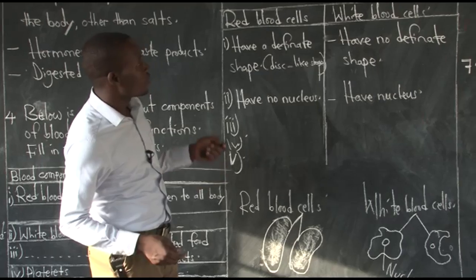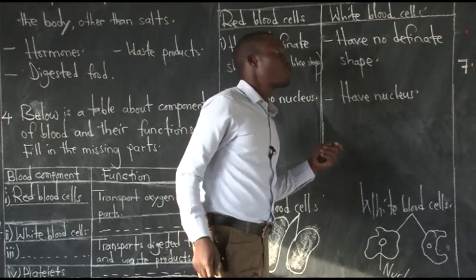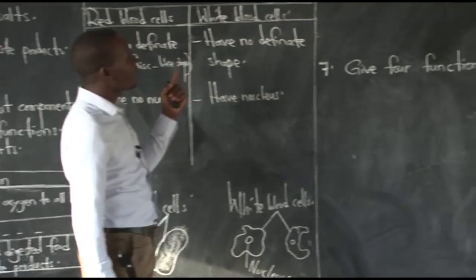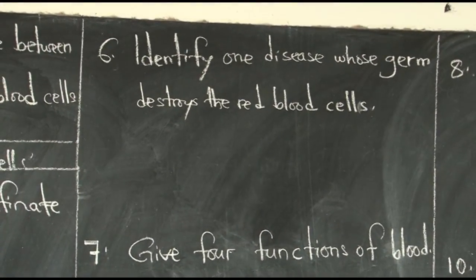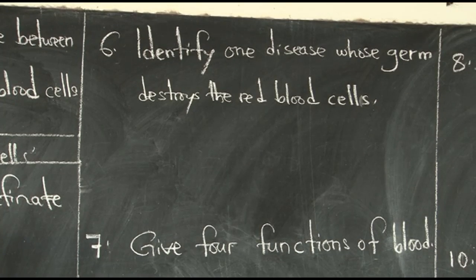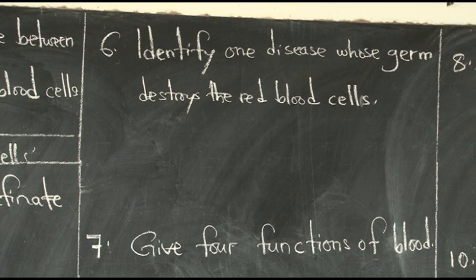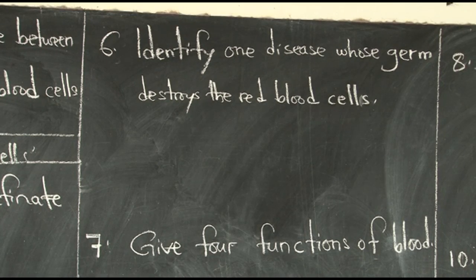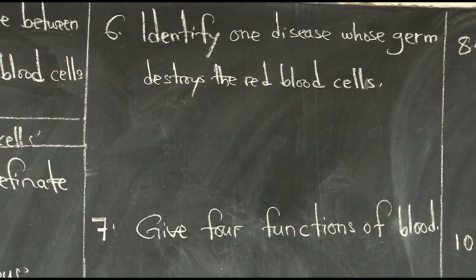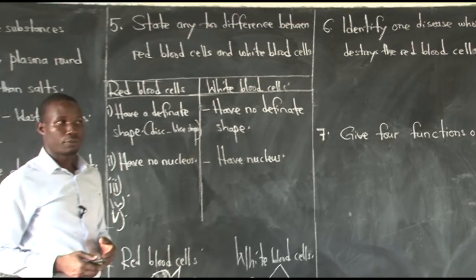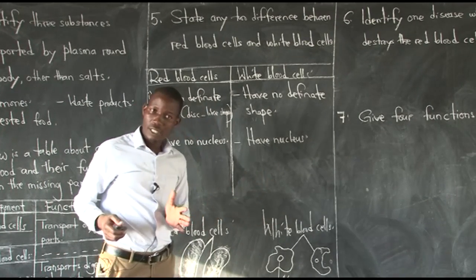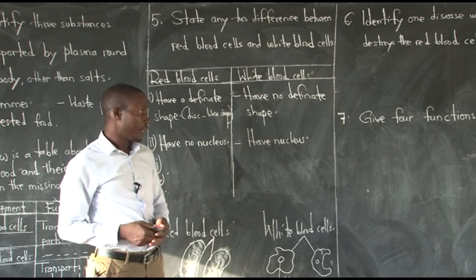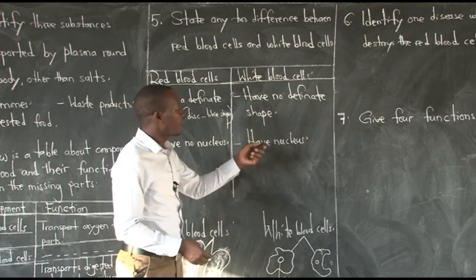This will push us to number six, where we are asked to identify one disease whose germ destroys the red blood cells. So check — which disease attacks red blood cells? We talked of different diseases: we talked of malaria, talked of anemia, talked of HIV. Those are all diseases. So check which one of them can affect red blood cells. We discussed on this, so you can still answer this number.